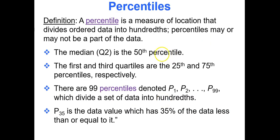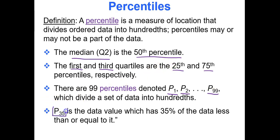Our next topic is percentiles, which divide a data set into hundreds. You have a minimum value, maximum value, and 99 percentiles in between. They may or may not be part of the data set. The median is the 50th percentile; the first and third quartiles are the 25th and 75th percentiles, respectively. Percentiles are represented as P with a subscript — P-sub-35, for instance, is the 35th percentile, the data value which has 35% of the data less than or equal to it.